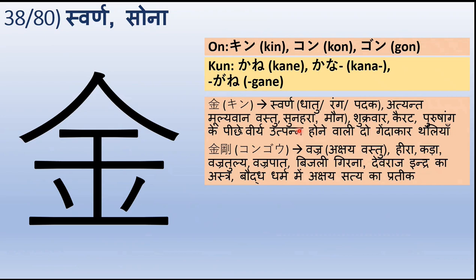Shukravar bhi darshata hai ye chinha. Karat yaani sone ki purity ka jo paimana hai — karat. Purushang ke pichhe virya utpann karne wali do gendakar thaliyan yaani testicles — male reproductive organs ka part — testicles, yeh wahi hai. Uske baad hai Kongo — Kongo ka arth hai vajra ya koi akshaiy vastu.